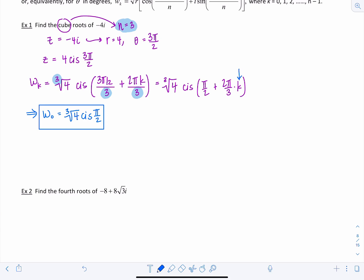Okay now to get the second one I'm going to have w sub 1, keep moving that up by 1, is going to be the cube root of 4, then we have cis pi over 2 plus 2 pi over 3, now I'm plugging in 1 for k.